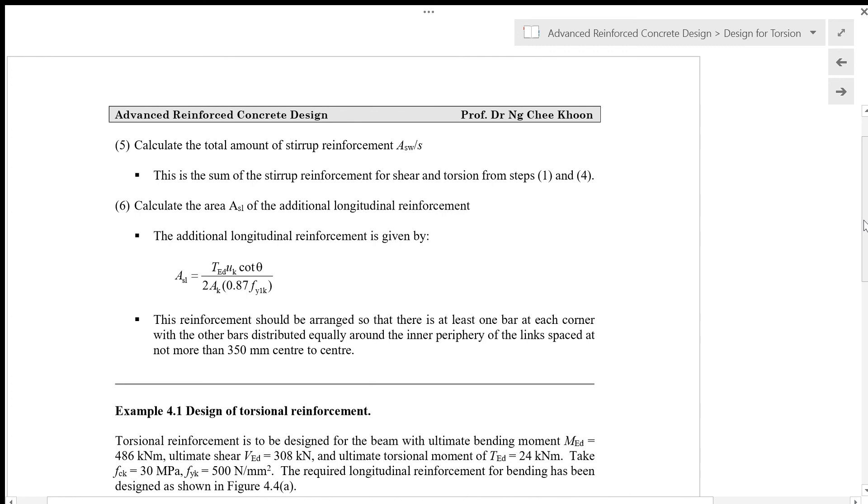The sixth step is to calculate the area As1 of the additional longitudinal reinforcement. The additional longitudinal reinforcement is given by As1 = TED × UK × cot θ/(2AK × 0.87 Fyk) as we have derived before.